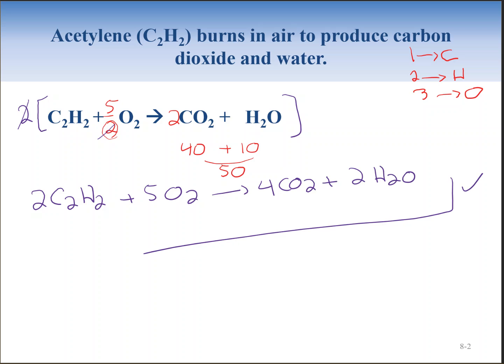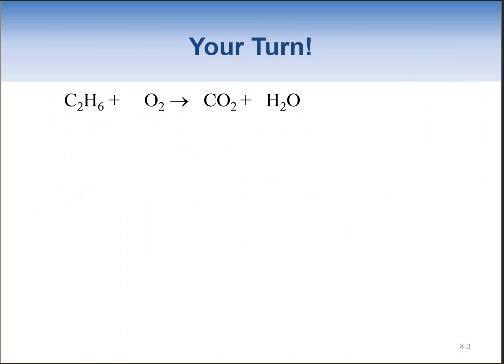If you end up with an odd number of oxygens, give O₂ the half coefficient, but remember you must multiply the entire reaction — every single reactant and every single product — by two to eliminate the fractional coefficient for oxygen.